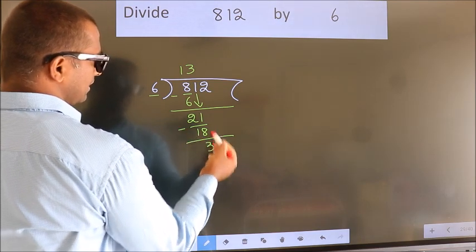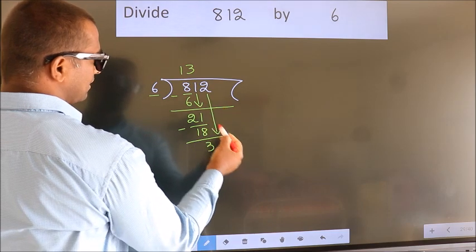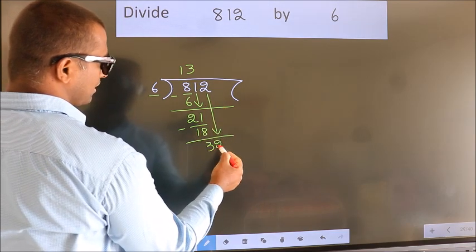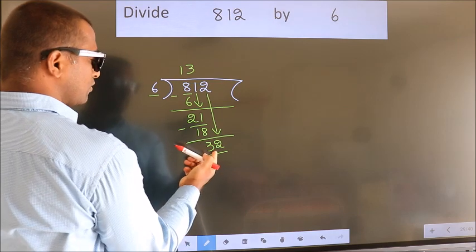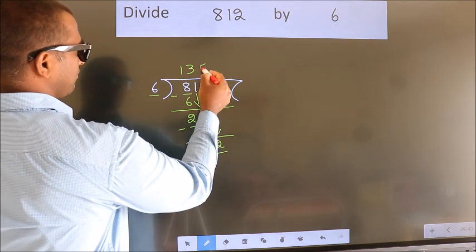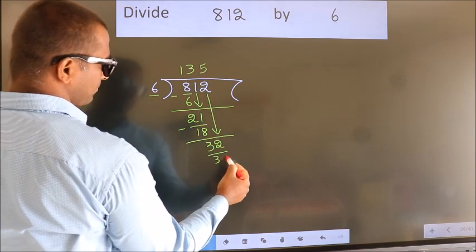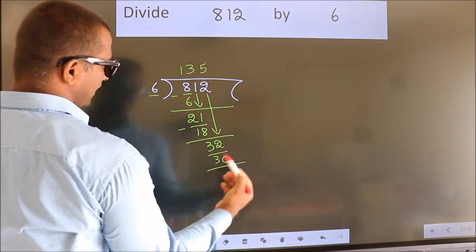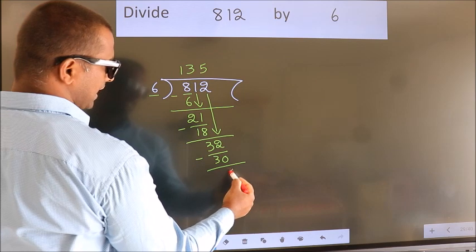After this, bring down the beside number. So, 2 down. So, 32. A number close to 32 in 6 table is 6 5s 30. Now, we subtract. We get 2.